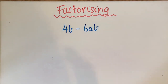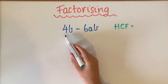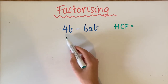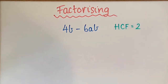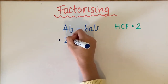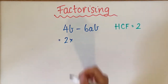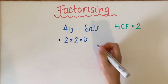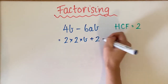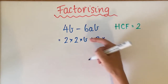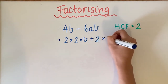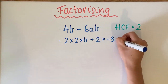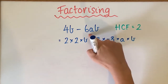For this one, we need to find the highest common factor. The biggest number that goes into 4 is 4, but that doesn't go into 6. So the second biggest, which is 2, also goes into 6, making our highest common factor 2. So 2 times 2 gives us 4b, and then 2 times negative 3 gives us negative 6, so we get 2 times 2b plus 2 times negative 3ab.